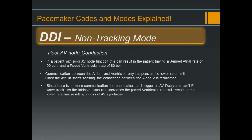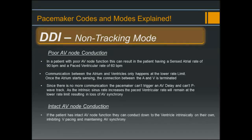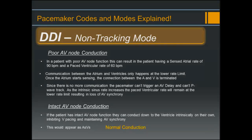The second way DDI plays out is if the patient has intact AV node function — they can conduct down to the ventricle intrinsically on their own, inhibiting V-pacing and maintaining AV synchrony. This would appear as A sense/V sense, or in other words normal conduction.